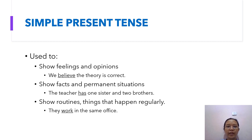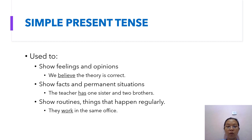Simple present tense is used to show feelings and opinions. For example, 'we believe the theory is correct' — 'believe' is showing opinions. It is also used to show facts and permanent situations. For example, 'the teacher has one sister and two brothers' — it's a fact.